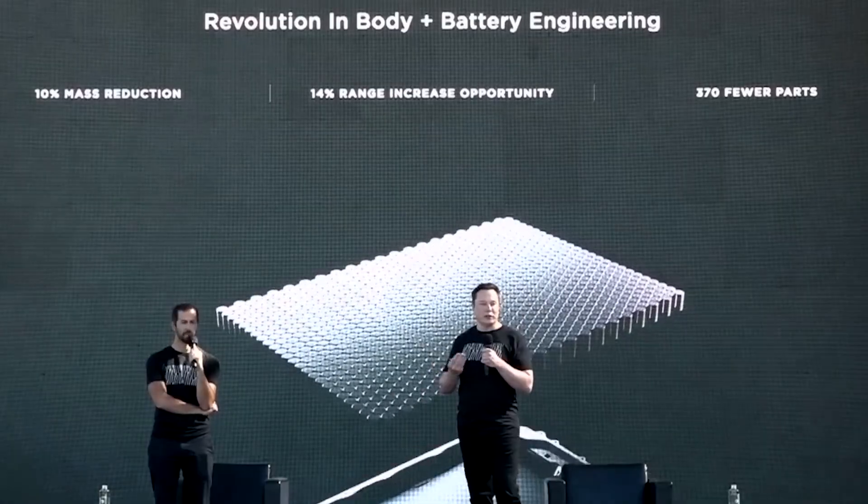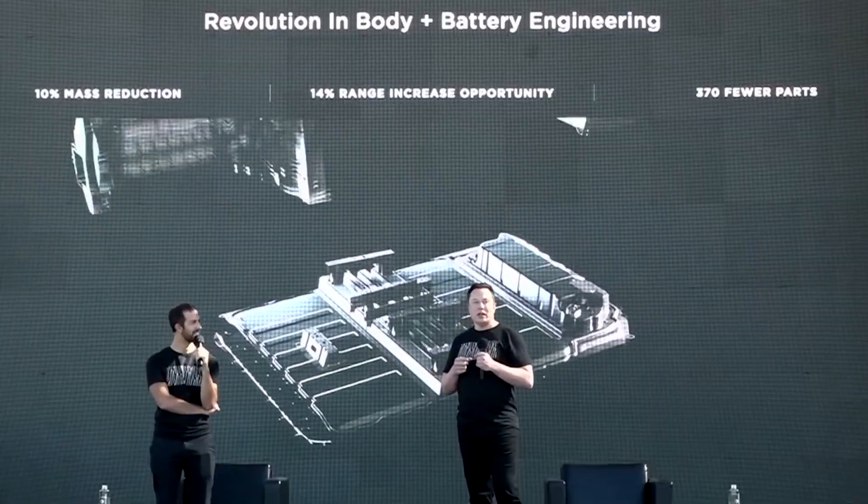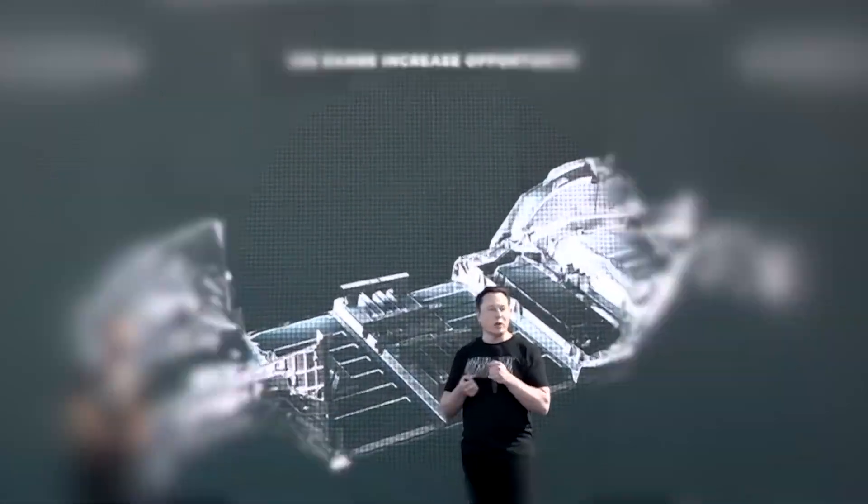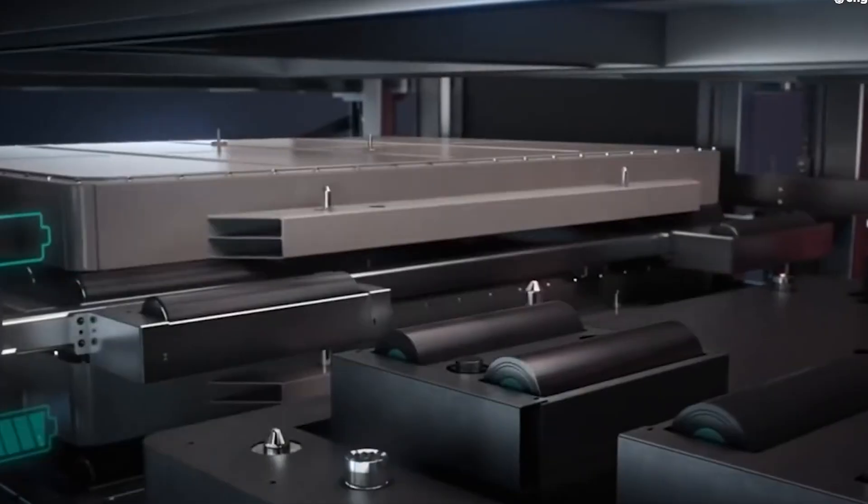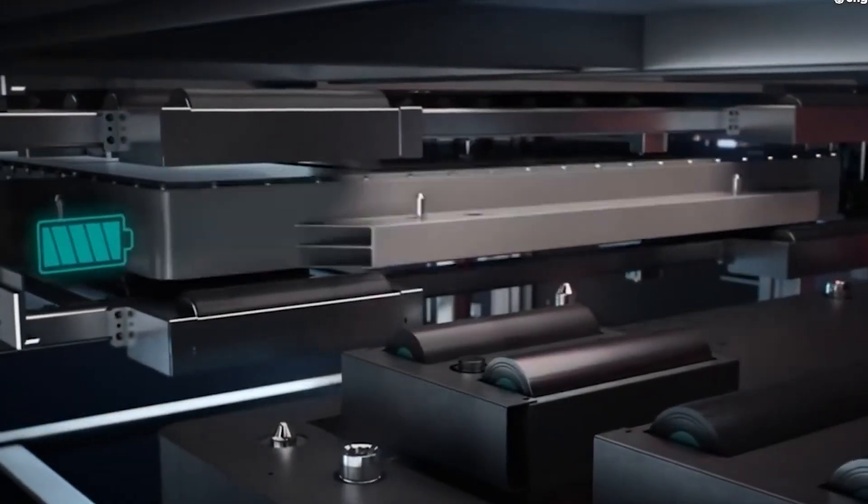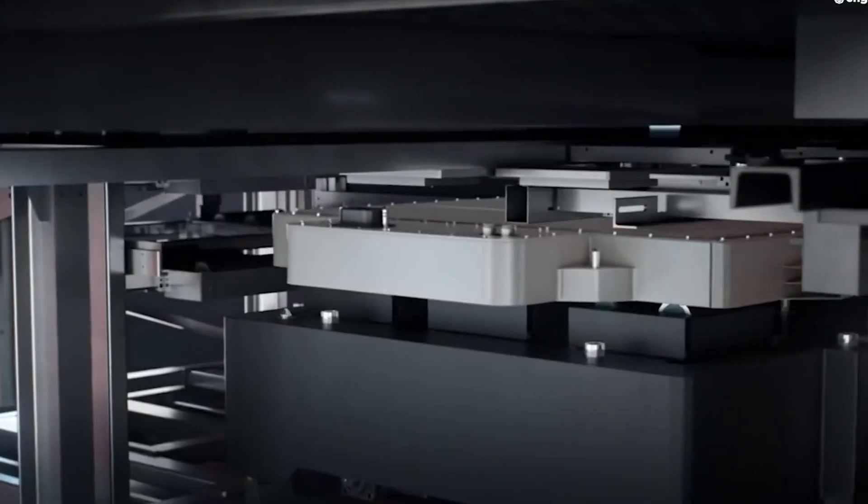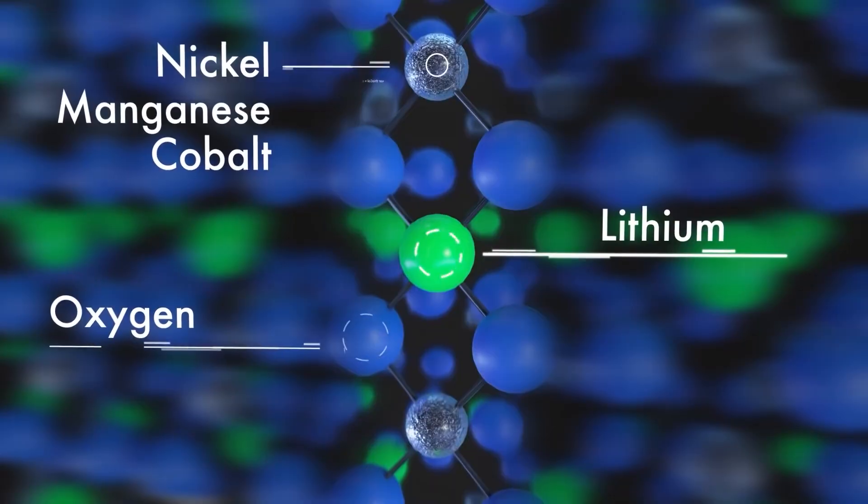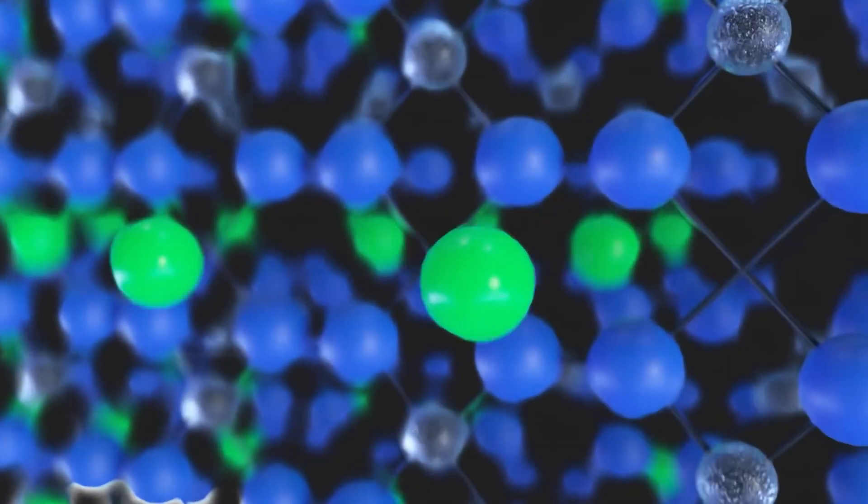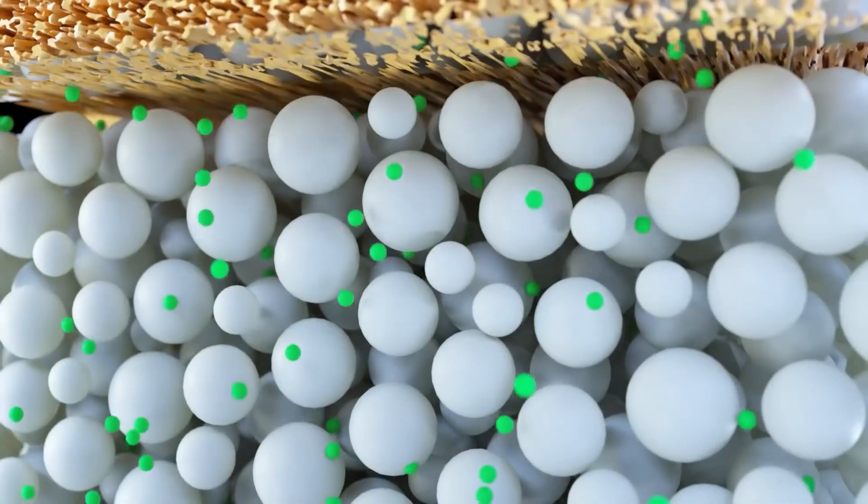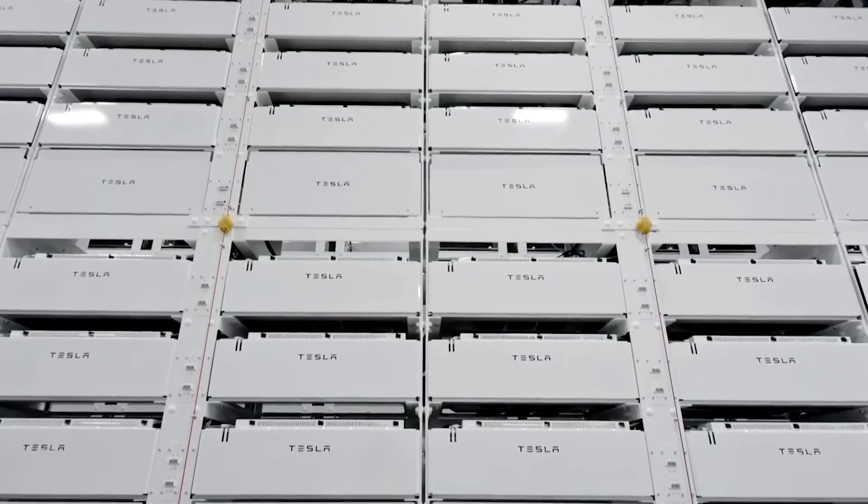The next generation is fundamentally different. Solid-state batteries replace liquid electrolytes with solid materials, dramatically improving energy density, charging speed, and safety profiles. Toyota announced plans to launch vehicles with solid-state cells before 2030, promising ranges exceeding 700 miles and full charges in just 10 minutes.